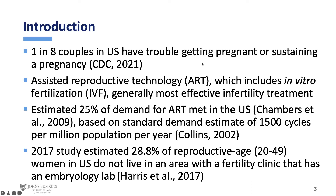To introduce the problem: one in eight couples in the U.S. have trouble getting pregnant or sustaining a pregnancy — that's about 12–13%. It's a pretty common problem but not terribly well talked about; it's sort of a taboo topic. So that large number of couples who have trouble is sort of a silent, large fraction of the country. There is good treatment for it though — assisted reproductive technology, which includes in vitro fertilization, which many people know about. The most common form of ART is IVF, and I'll use those terms interchangeably.